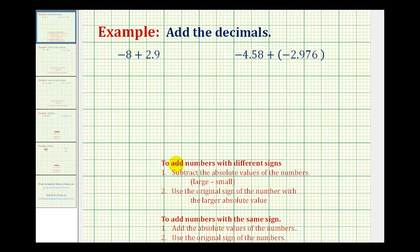The formal rules for adding numbers with different signs are, we want to subtract the absolute values of the numbers. And we're always going to subtract the smaller from the larger. And then we'll use the sign of the original number with the larger absolute value.